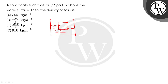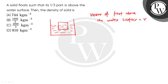The 1/3 part is above the water surface, so the volume of the part above the water surface will be V/3, where V is the total volume of the solid.